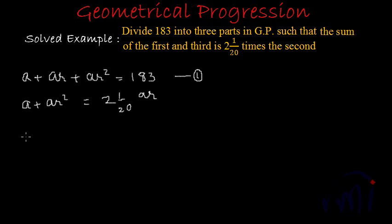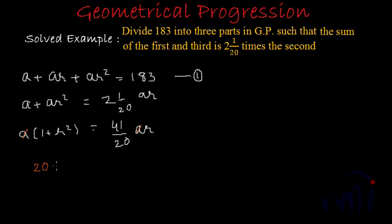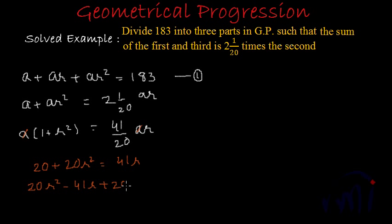From the left-hand side, we can take a common, leaving (1 + r²) inside the bracket. On the right-hand side, converting the mixed fraction 2 1/20 to an improper fraction gives 41/20. So we have a(1 + r²) = (41/20)ar. The a cancels on both sides, and multiplying through by 20 gives 20 + 20r² = 41r.